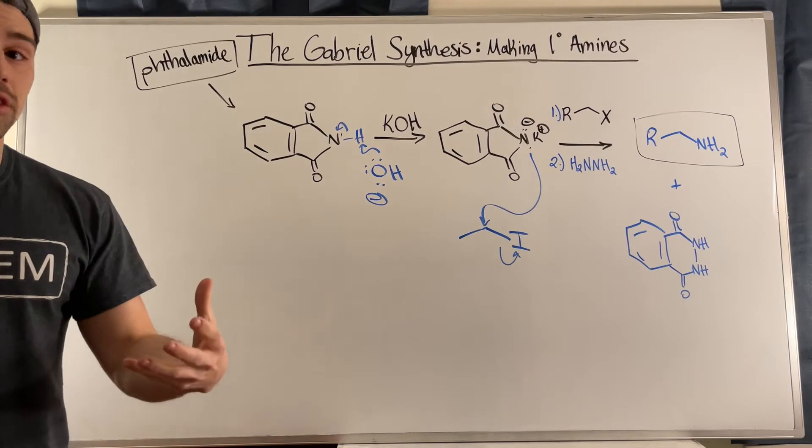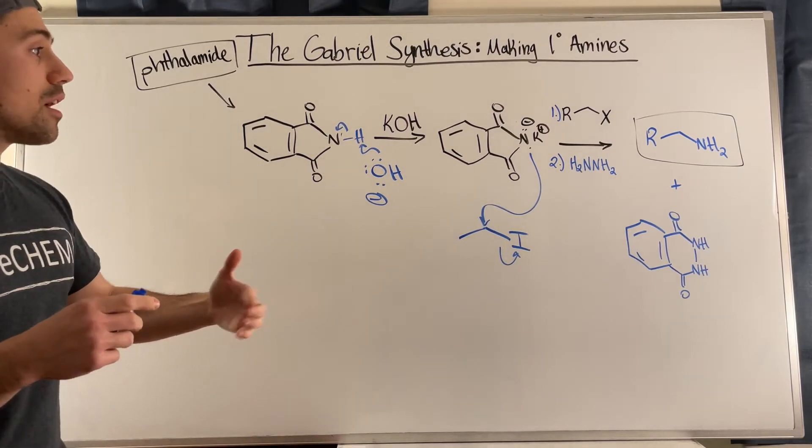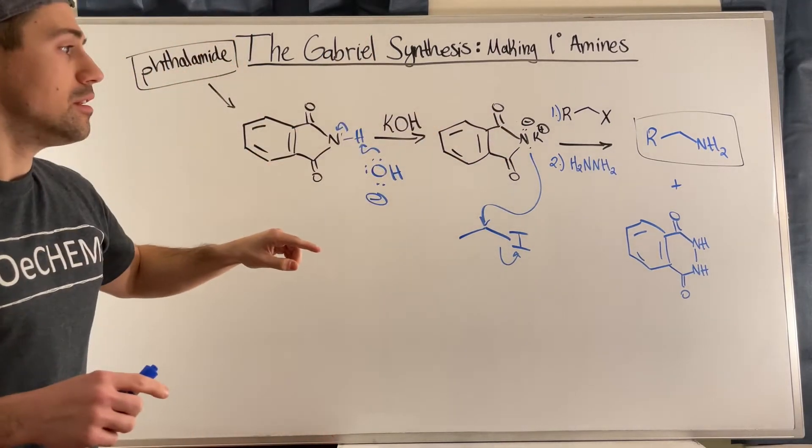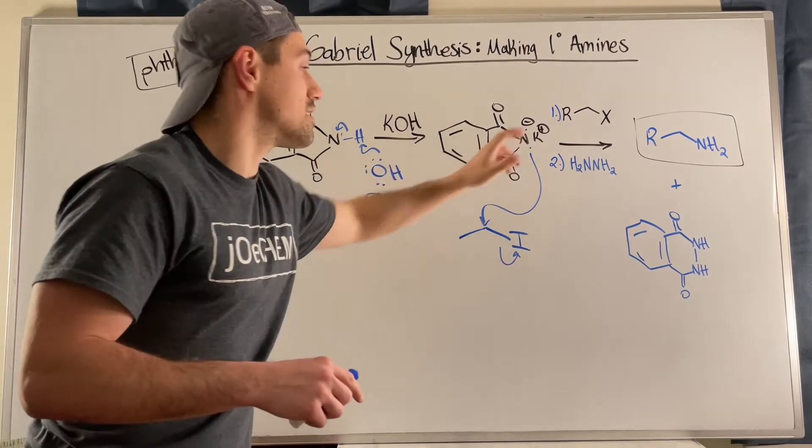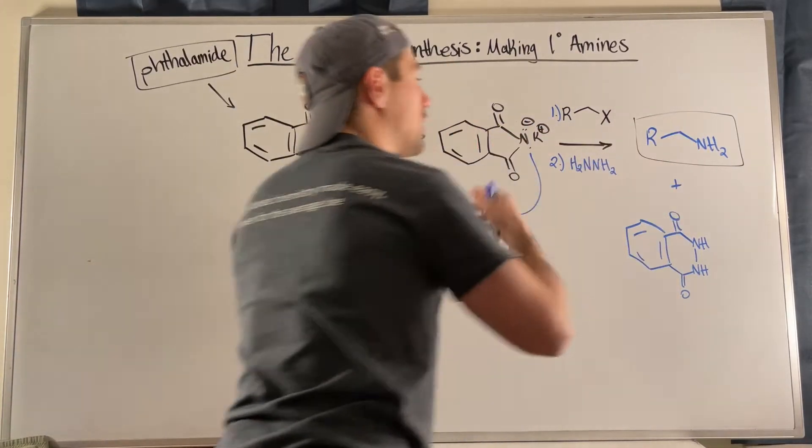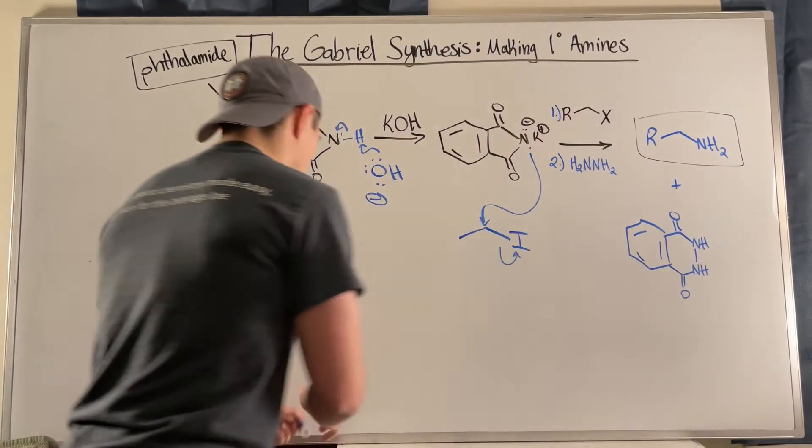And then what you can do is you can throw in NH2-NH2, that very nice reagent we saw with the Wolf-Kishner reaction that helped us reduce carbonyls. That will help us unravel this diamide with this nitrogen. It'll actually liberate this nitrogen right there. You'll get your primary amine, and then you'll produce this compound right there.